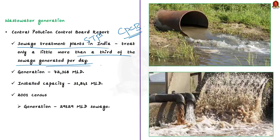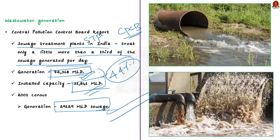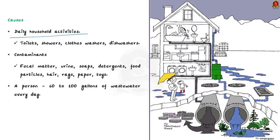India generated 72,368 million liters per day of sewage, whereas the installed capacity of STPs was just 31,841 million liters per day — under 44%. As per the 2001 census, all Class 1 cities and Class 2 towns together generated an estimated 29,129 million liters per day of sewage. The wastewater generation is because of daily household activities and comes from toilets, showers, clothes washers, dishwashers, etc.